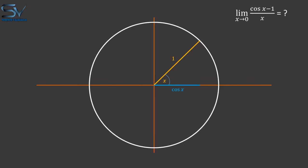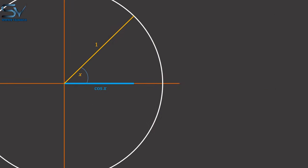Let's take a closer look at this. This distance is 1 unit. What remains is 1 minus cosine of x.